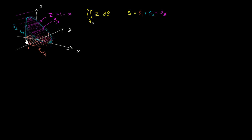The blue surface is above the boundary of the unit circle and below the plane. The third surface is the subset of that purple plane z equals 1 minus x that overlaps and forms the top of this cylinder. So we can rewrite this surface integral as the sum of three surface integrals.